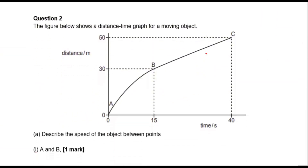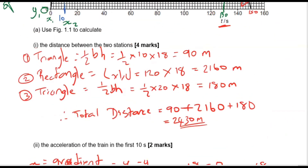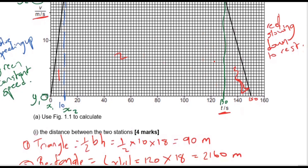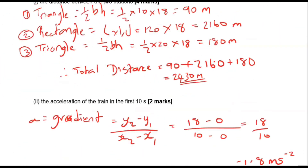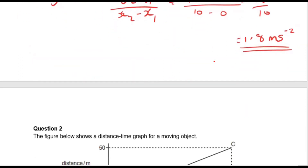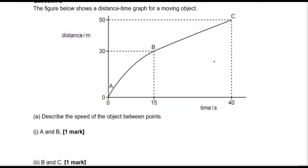In question one, notice that we did all three things possible with a speed-time graph: we described the motion, we found the distance by finding the area under the line, and we found the acceleration by finding the gradient of the line. Now let's move into a distance-time graph for question two.